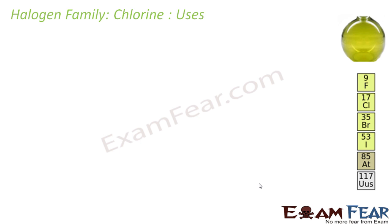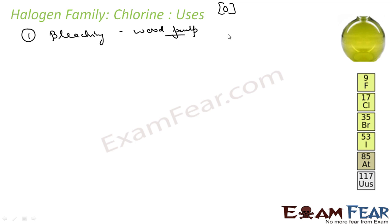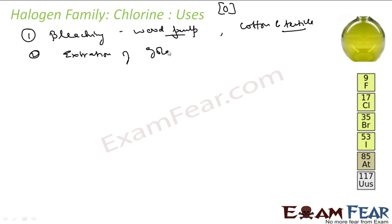Uses of chlorine: First, it is used as a bleaching agent — for bleaching wood pulp to prepare paper (which is white), and for bleaching cotton and textiles to give different shades. It is also used for extraction of gold and platinum, and in the manufacture of dyes, drugs, and detergents.